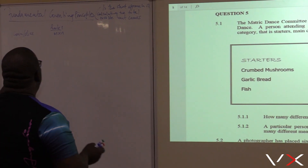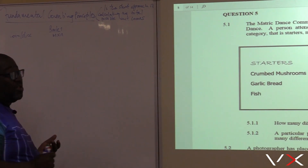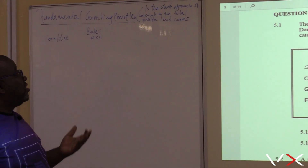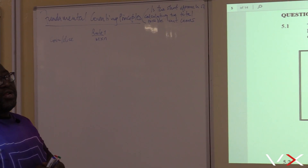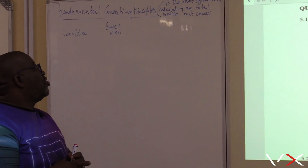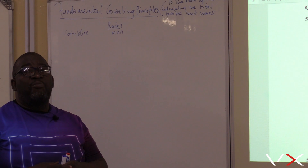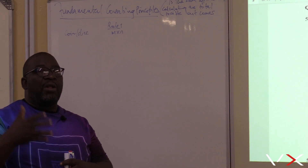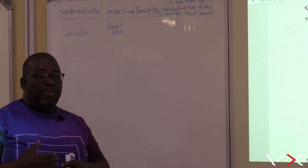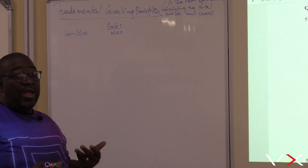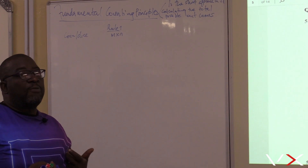Remember, what is the fundamental counting principle? What are we trying to do in this section? We're trying to find a shorter approach of calculating the number of possible outcomes — just calculating the number of possible outcomes in a shorter way.